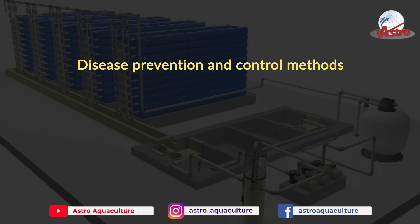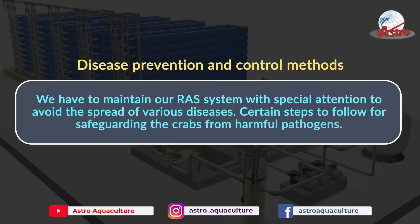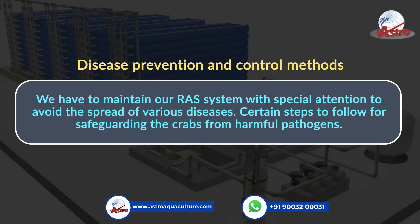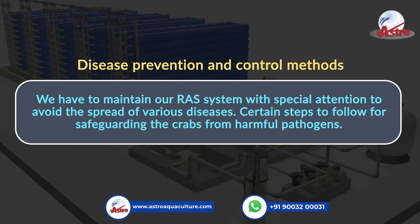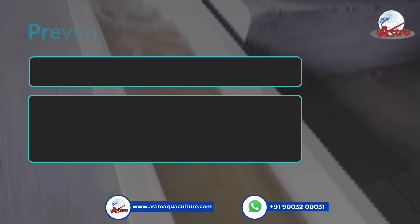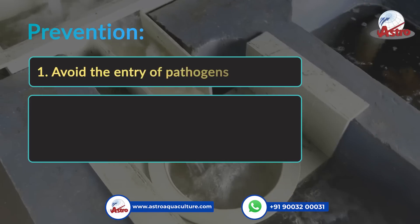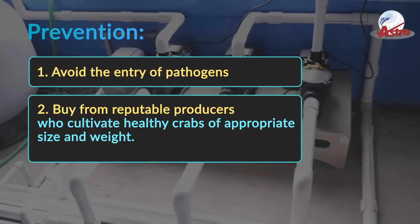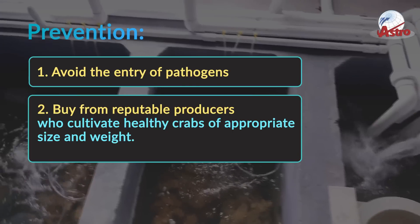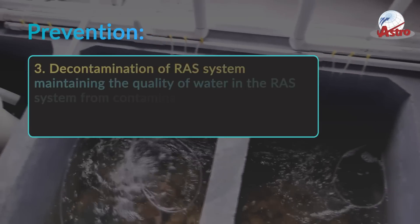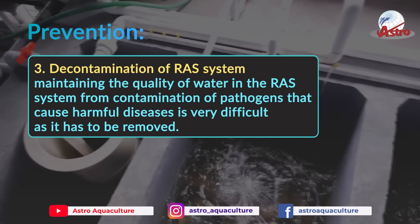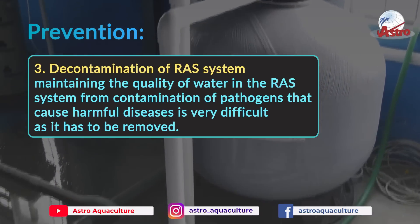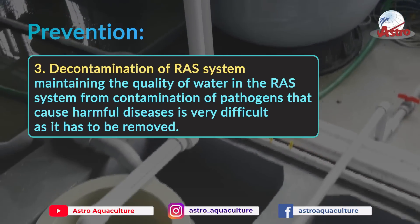Disease Prevention and Control Methods: We have to maintain our RAS system with special attention to avoid the spread of various diseases. Steps to safeguard crabs from harmful pathogens — 1. Avoid the entry of pathogens. 2. Buy from reputable producers who cultivate healthy crabs of appropriate size and weight. 3. Decontamination of RAS system — maintaining water quality free from contamination of pathogens is very important.